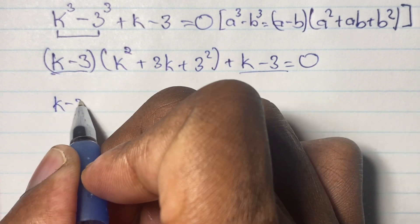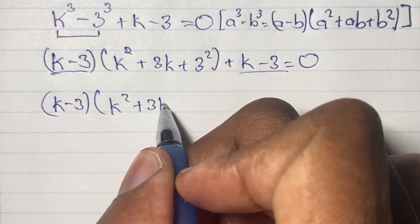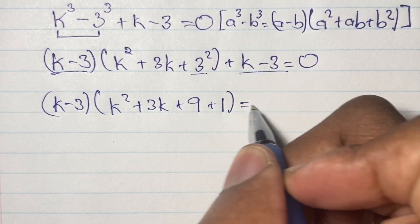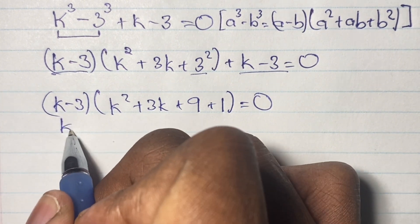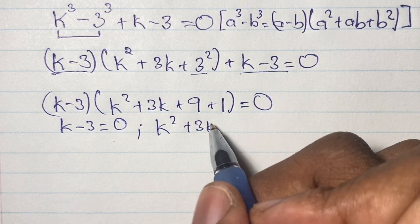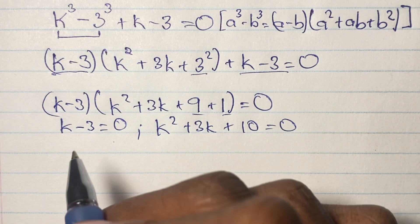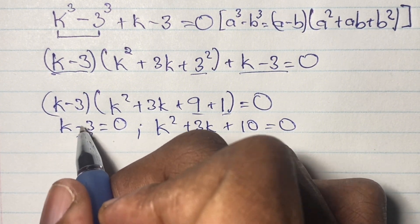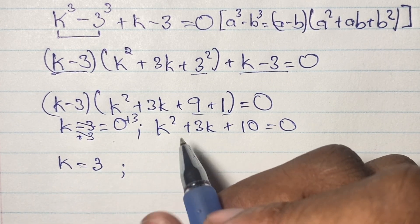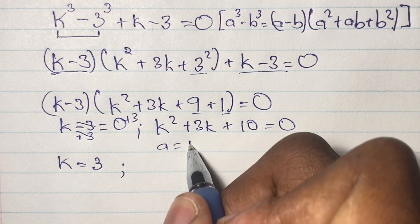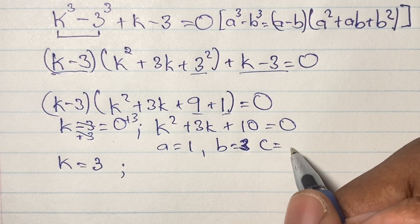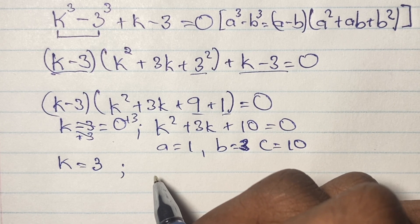Since (k - 3) appears twice, we factor it out. We get (k - 3)(k² + 3k + 9 + 1) = 0, which means (k - 3)(k² + 3k + 10) = 0. This gives us two equations: k - 3 = 0, which solves to k = 3, and a quadratic equation k² + 3k + 10 = 0 where a = 1, b = 3, and c = 10.